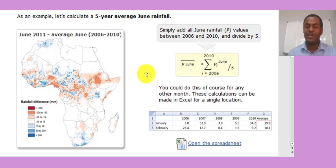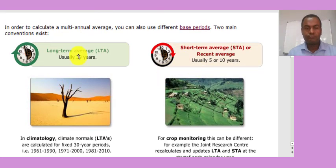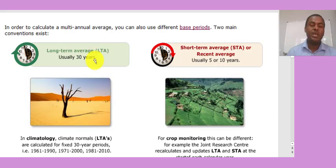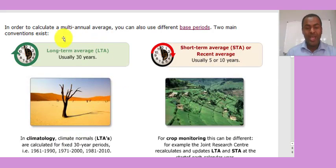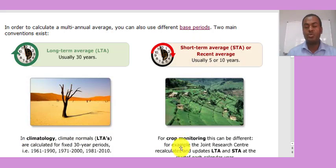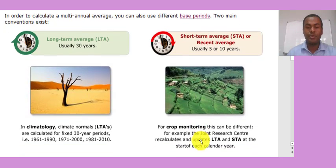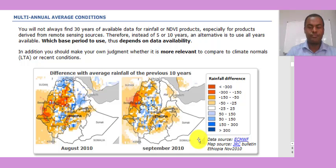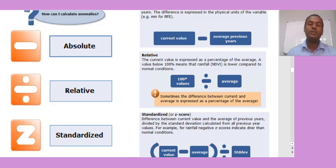You can create a normal year by averaging the previous five, ten, fifteen, or thirty years of June rainfall and subtracting it from the current June 2011 value. A negative result indicates drought; a positive result indicates good conditions. A thirty-year average is commonly considered a normal year in climatological applications, while five- or ten-year averages are used for short-term applications like crop monitoring.